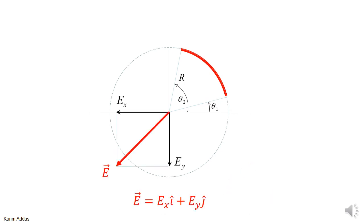Once you have the x-component and y-component of the electric field, you get the total electric field by combining them — one in the i-direction and one in the j-direction. This red vector then represents the total electric field due to the arc. Let's do it.